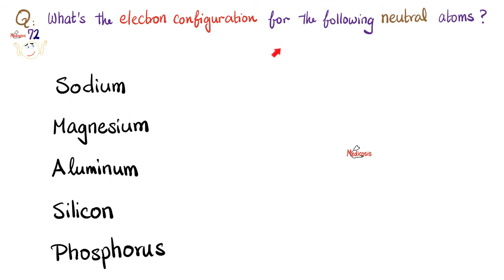Question of the day: what's the electron configuration of the following neutral atoms? Please pause and let me know your answers in the comment section. You will find the answer key in the next video, which will be titled the Pauli Exclusion Principle, Hund's Rule, Octet Rule, and the Aufbau Principle.